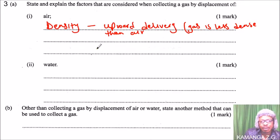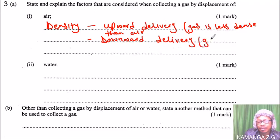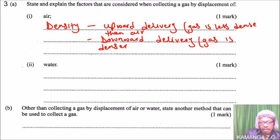The second case is when the gas is more dense than air — we use what is called downward delivery. Downward delivery is used when the gas is denser than air.